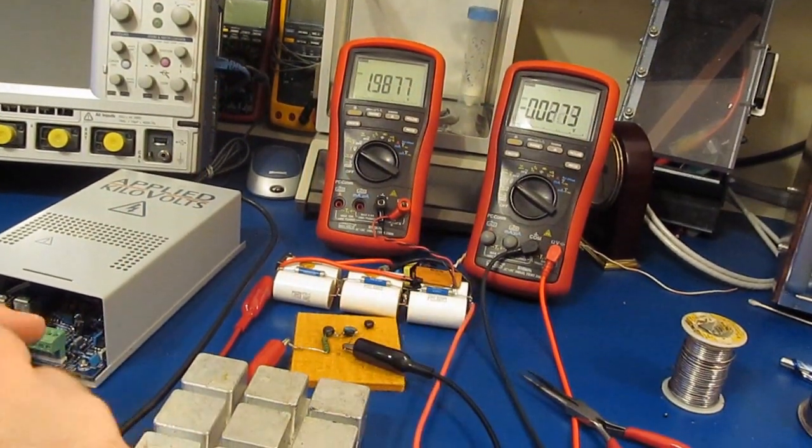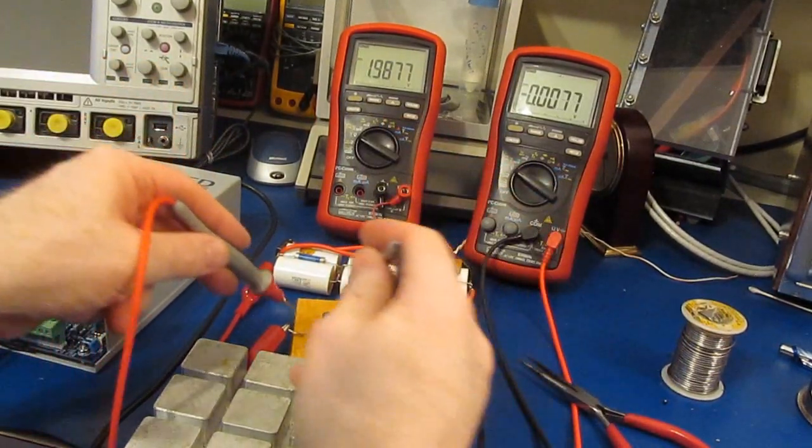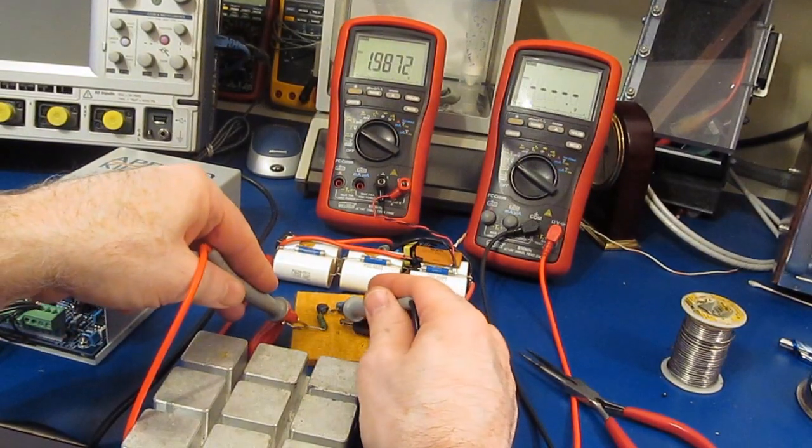And you can see we're currently putting out 2,000 volts across this. And it has stopped smoking. Let's just see how much now has dropped across the PTC and resistor.